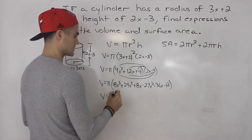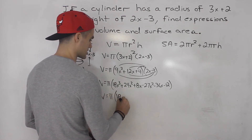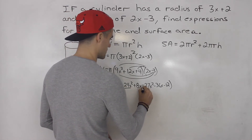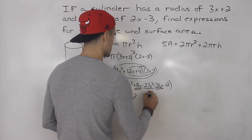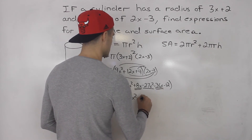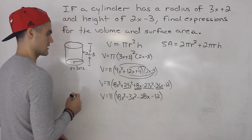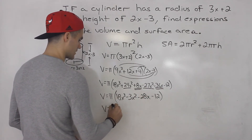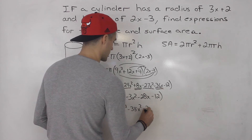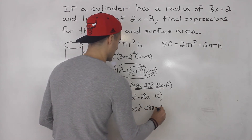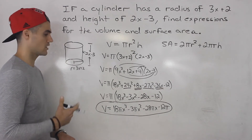Then what I would do is simplify this bracket before distributing the pi. So this would be 18x cubed, then 24x squared minus 27x squared gives us minus 3x squared, then 8x minus 36x gives us minus 28x, and then minus 12 at the end. Then we distribute the pi to get 18 pi x cubed minus 3 pi x squared minus 28 pi x minus 12 pi. That is the simplified expression for the volume of the cylinder.